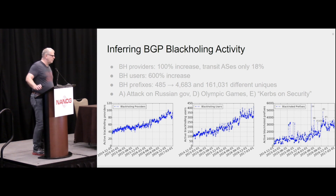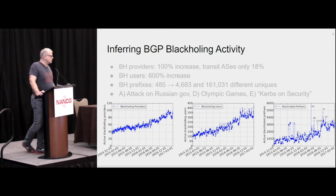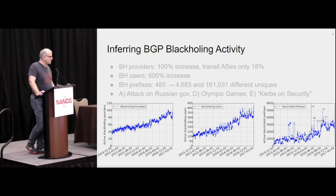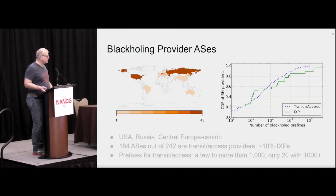On the rightmost table you can see events and blackhole prefixes. There is a really big spike marked as event A — an attack on the Russian government — then the attack on the Olympic Games in Brazil, and also the attack on Krebs on Security, marked as E.